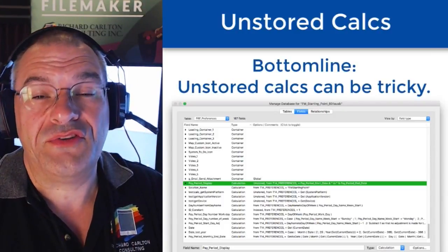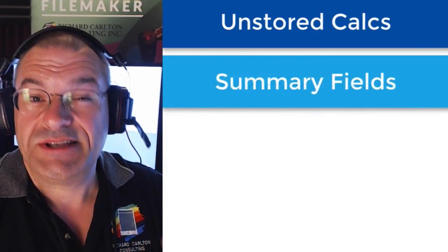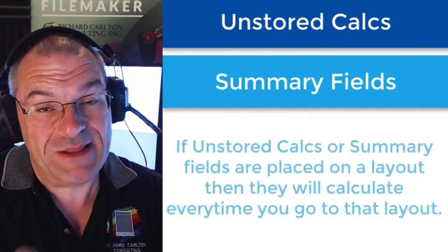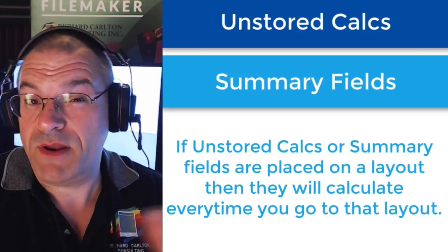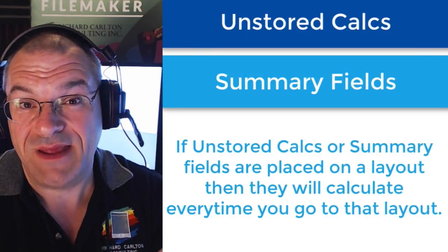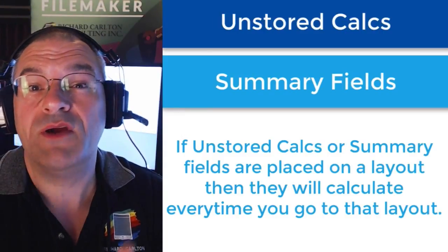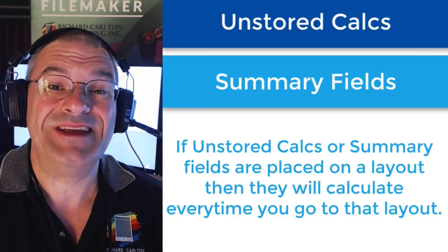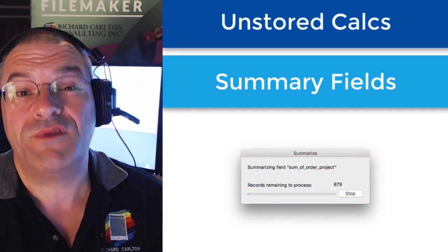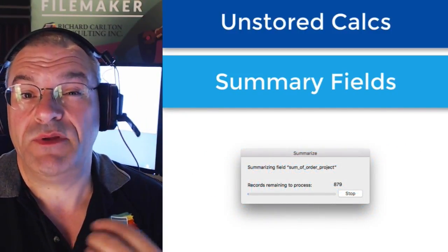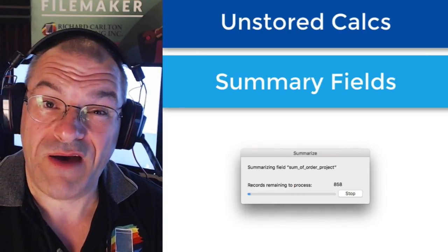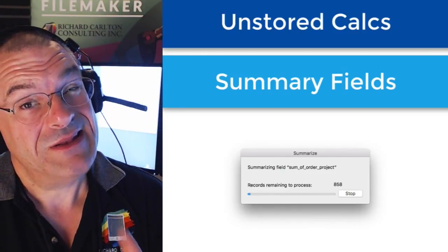That also goes the same for summary fields. Summary fields and unstored calculation fields, if they are placed on a layout or referenced by a script that runs, will actually evaluate and take processing time from your FileMaker custom app. In fact, you might see a progress bar that goes across the screen while you wait for this to complete. Sometimes it'll be very quick, and sometimes it will be so slow that you might need to get a cup of coffee or maybe go to lunch. Not good.